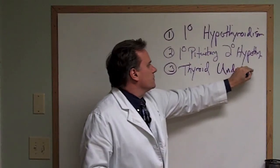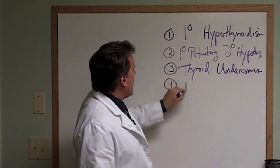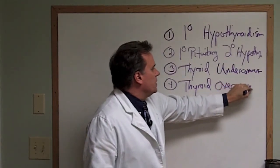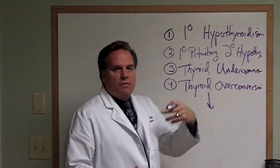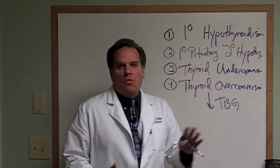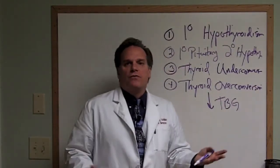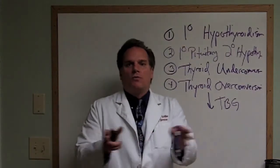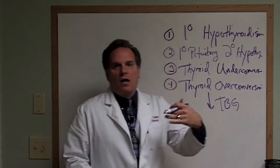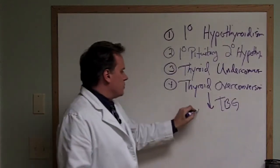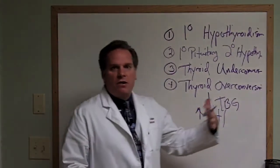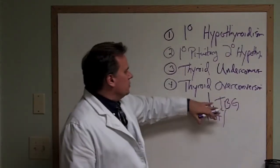The fourth pattern is called thyroid overconversion. In this case, you're making too much T3, possibly because you don't have enough thyroid binding globulin — the taxi cabs that bring hormones around the body. If there's not enough of those, you could be overconverting into T3. The typical reason this occurs, especially in women, is too much testosterone. Increased testosterone causes overconversion, and that can be due to a blood sugar issue. So by not addressing blood sugar, which causes testosterone in women to rise, you'll never get to the crux of the problem.